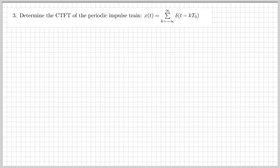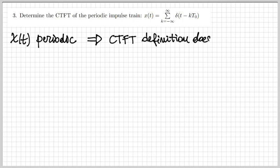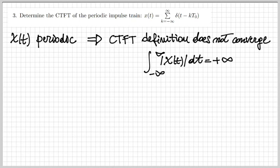The third and last exercise asks to determine the continuous-time Fourier transform of a periodic impulse train. This is a very important exercise. The impulse train is periodic, so the definition of the CTFT with the integral does not converge — the signal has infinite energy and is not absolutely integrable. We need to find the Fourier transform another way, through the Fourier series, which can be calculated when a signal is periodic.